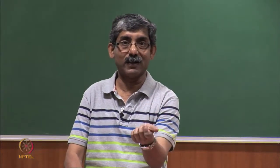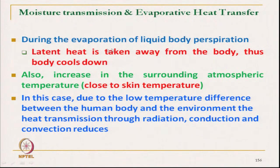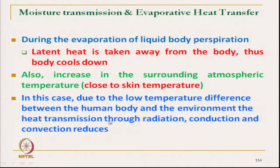Because the temperature gradient — the difference in temperature — is reduced, as we have already discussed. During the evaporation of liquid body perspiration, that is sweat, the latent heat is taken away from the body, and thus the body cools down. Also, as the surrounding atmospheric temperature increases close to skin temperature, the body cools down by taking latent heat. In this case, due to the low temperature difference between the human body and the environment, heat transmission through radiation, conduction, and convection reduces.